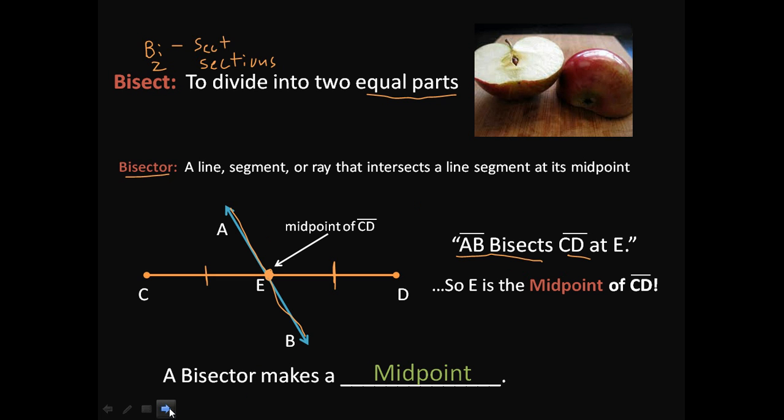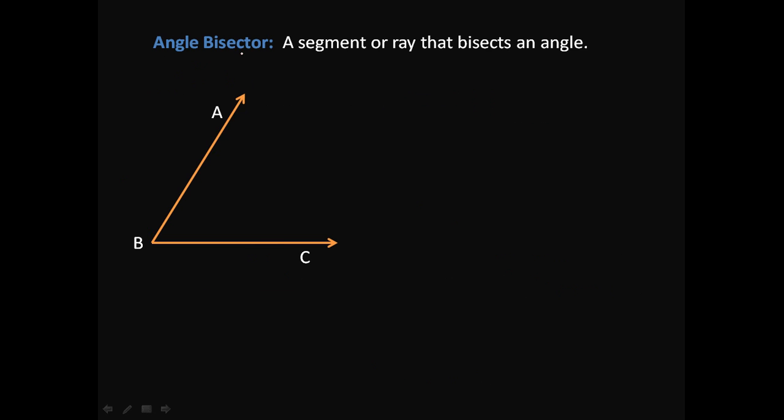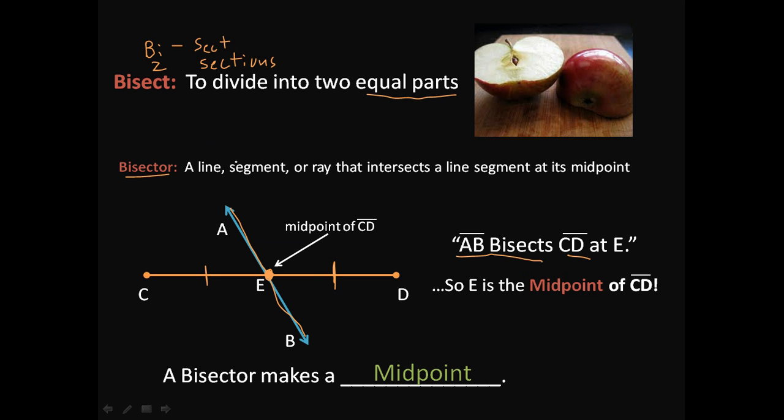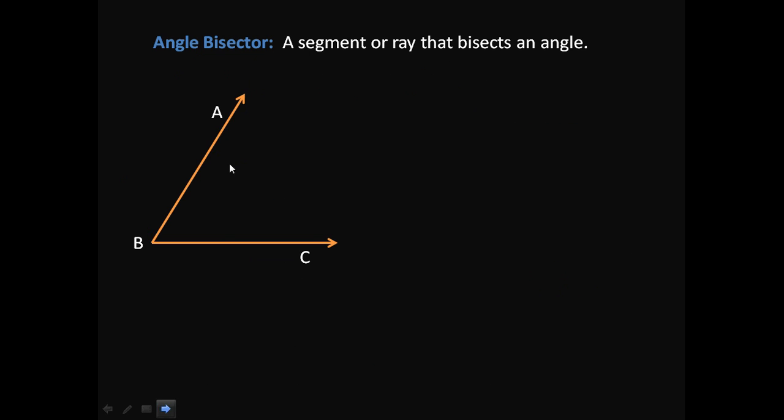Let's take a look at what that would look like with angles. So this is called an angle bisector. And an angle bisector is simply a segment or ray that bisects an angle. So just like we can cut in half or divide a line into two equal parts, we can also divide an angle into two equal parts. So here we have an angle. We have angle ABC. And we're going to go ahead and draw in a bisector. So BD, I should have a D right here. Segment BD bisects angle ABC.